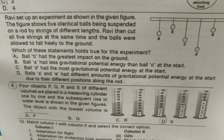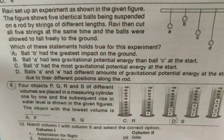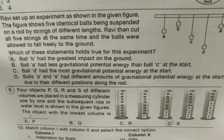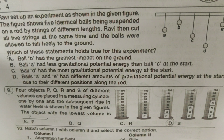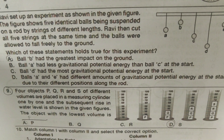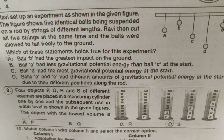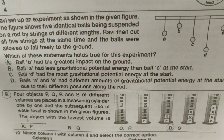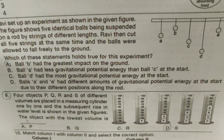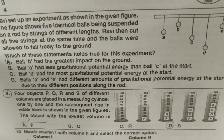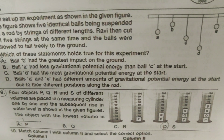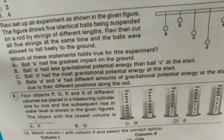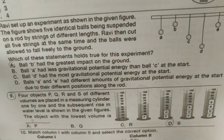Objects P, Q, R, and S of different volumes are placed in a measuring cylinder one by one, and the subsequent rise in water level is shown in the given figure. The object with the lowest volume — can you guess? N. Guess it right guys.